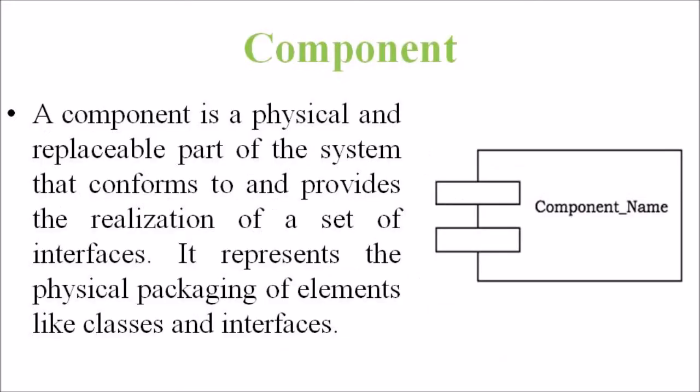Next, we are discussing the term component. A component is a physical and replaceable part of the system that conforms to and provides the realization of a set of interfaces. It represents the physical packaging of elements like classes and interfaces. The notation in the UML diagram is as shown in this figure: a component is represented by a rectangle with tabs.